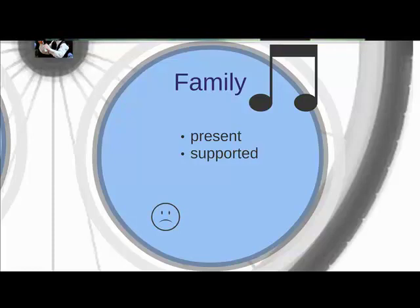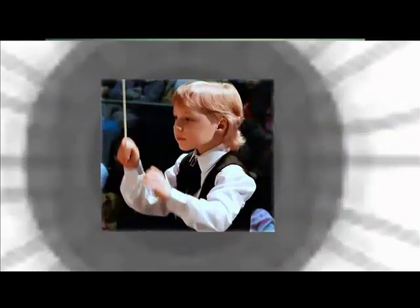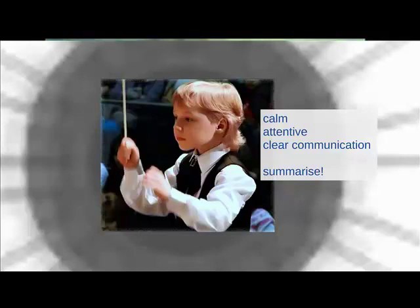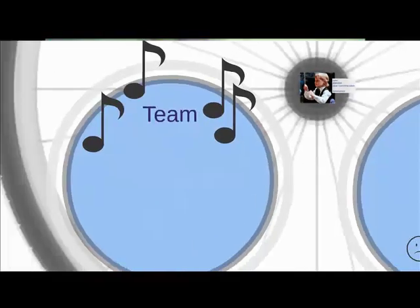At some point you may have to deliver bad news. Fire a warning shot first: 'Things are not going very well, we're not very optimistic.' Then be very definite and clear when you do deliver it. The ideal attributes of a team leader are being calm, attentive to your team, and a clear communicator. Research suggests that what makes teams work well is a shared mental model, clear communication, and clarity about who the team leader is. It's also really helpful to summarize frequently: how long you've been going, what you've done, the responses, what you expect to happen.